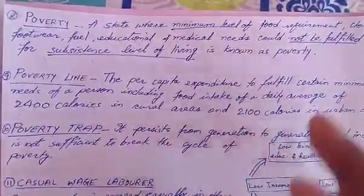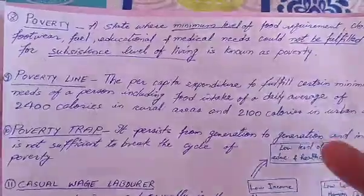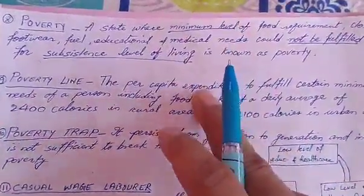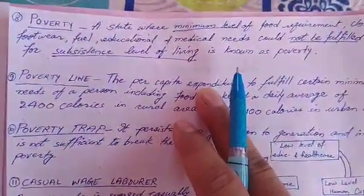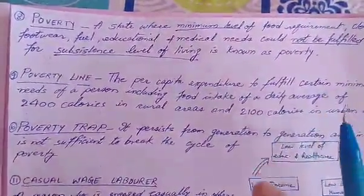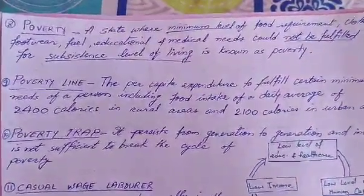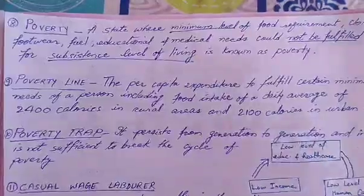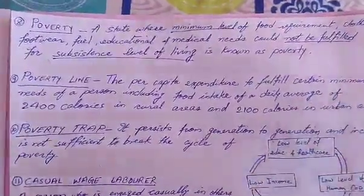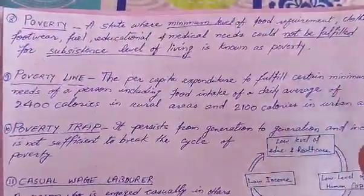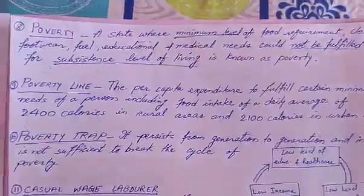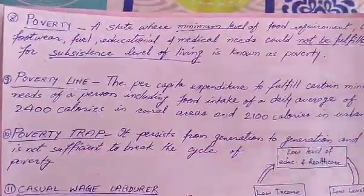Urban areas mein zyada hote hain technocrats, software engineers, doctors — yeh sab rehte hain. Rural mein farmers wagera rehte hain. Per capita ka matlab — per capita ek Latin word hai, literal meaning hota hai 'per head.' Per capita expenditure ka formula: market value lo saare goods ka jo ek ghar mein kharcha hota hai, divide karo country ki population se — aapka per capita expenditure nikal jaayega, matlab ek vyakti pe kitna expenditure ho raha hai. Jo usse upar ho, woh poverty line se upar rehega.